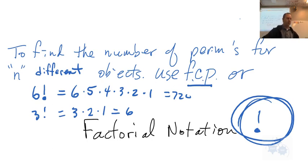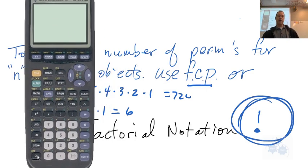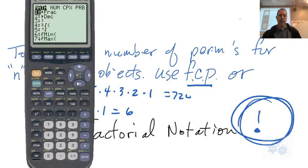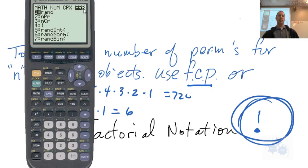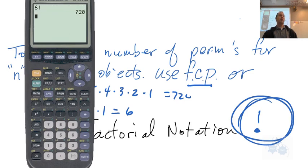See if you can find the factorial button on your calculator. If you have a scientific calculator, you'll have a factorial notation button. On my graphing calculator I can find it under Math, then Number, then Probability. There it is. On your scientific calculator it should be right on the keypad, maybe as a second function. Try it out — do 6! and make sure you get 720. 3! should be six.